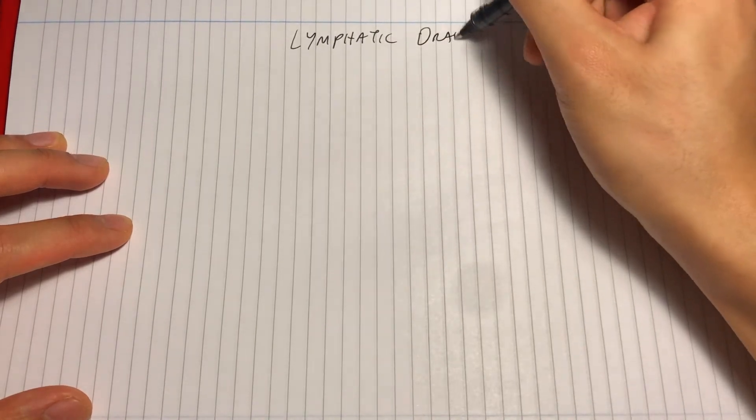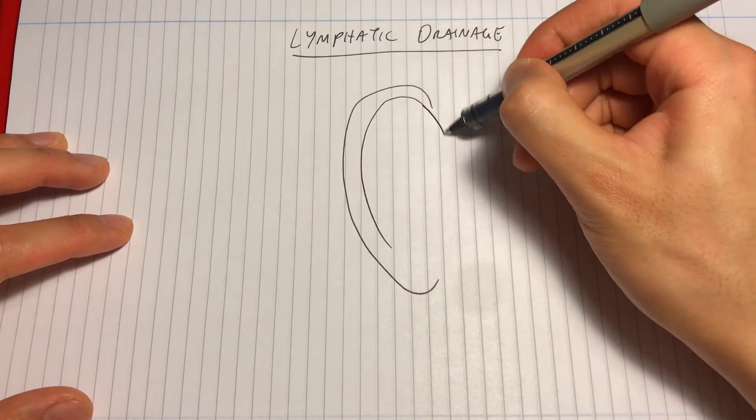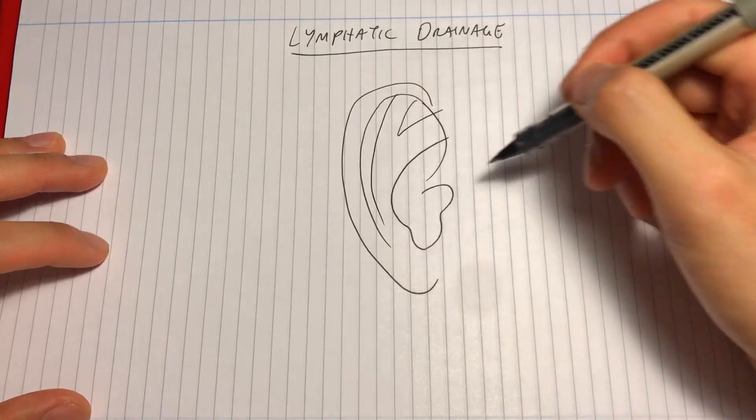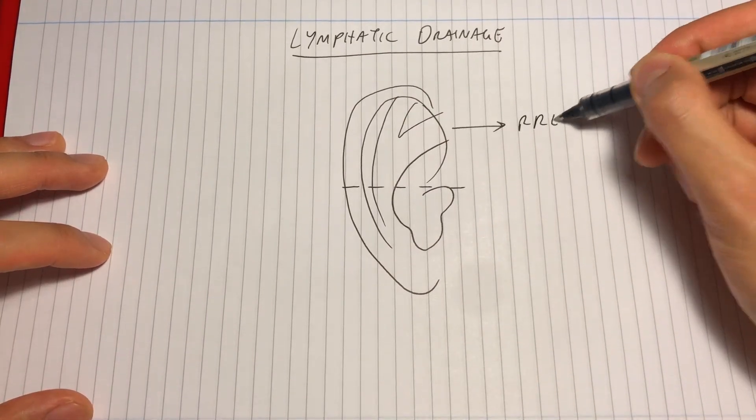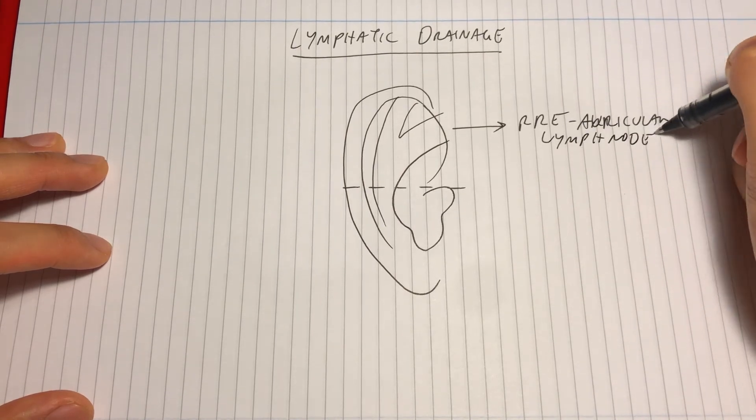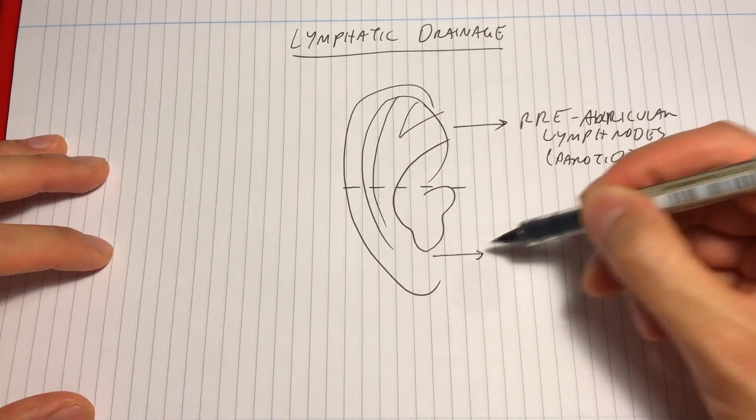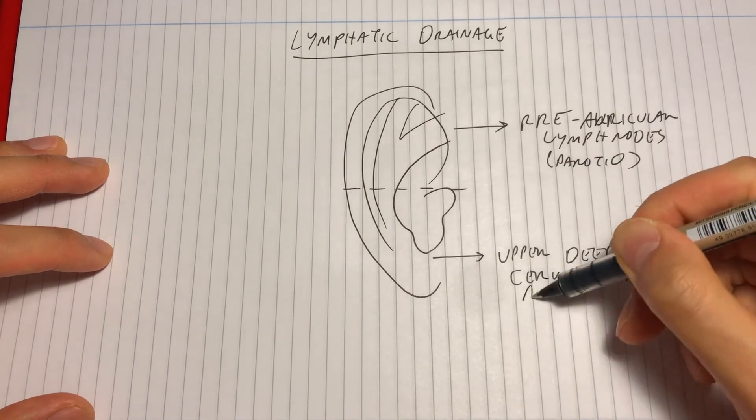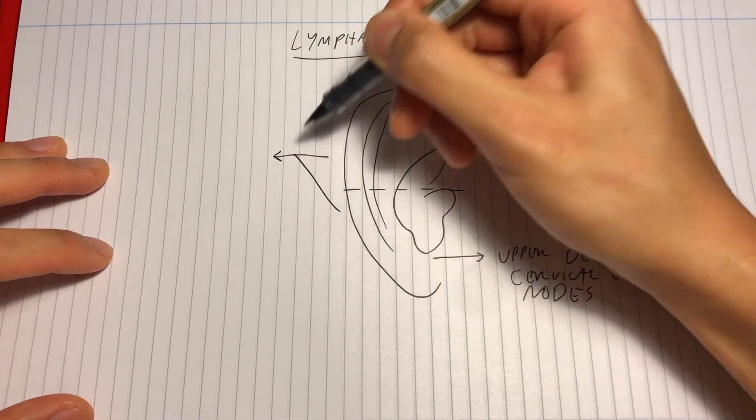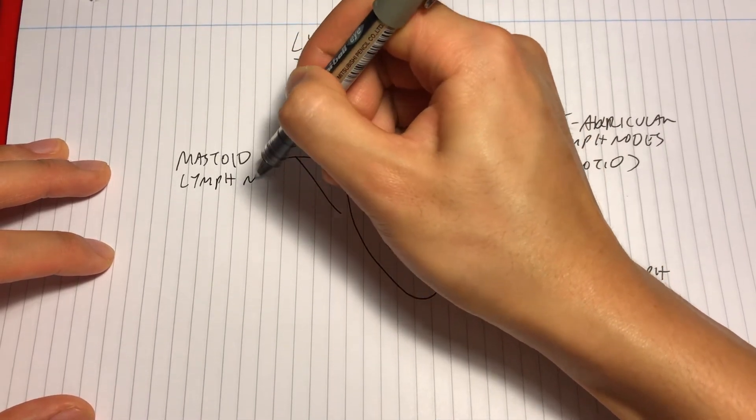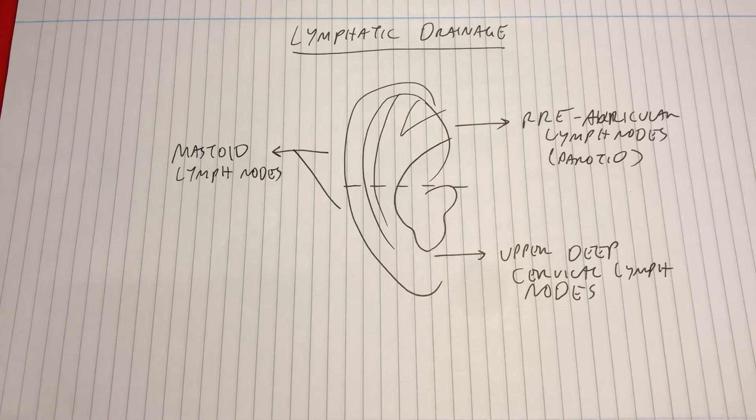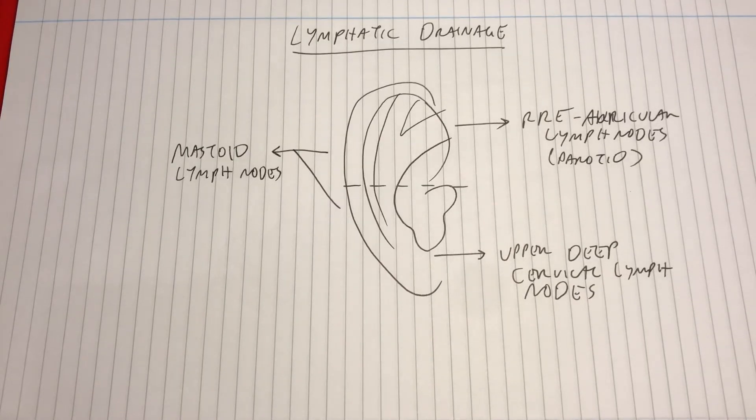Now for the lymphatic drainage of the pinna. The anterior surface of the pinna is divided into superior and inferior halves. The superior half drains to the preauricular lymph nodes in the parotid, and the inferior half drains to the upper deep cervical lymph nodes. The whole of the posterior pinna drains to the mastoid lymph nodes. This is important because a patient with a pathological lymph node, for example in the parotid, may have had a cancer in the pinna as the source.